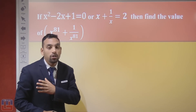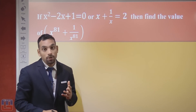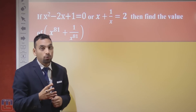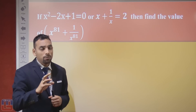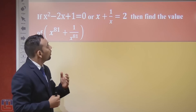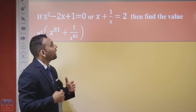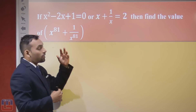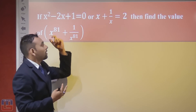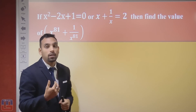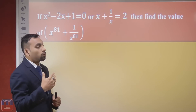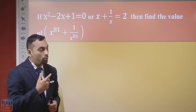Let us move to the most important tricks of algebra. In this question I will give you a trick on how to solve it and what the important factors are as far as the exam is concerned. We have given x squared minus 2x plus 1 equals 0, or equivalently x plus 1 upon x equals 2. The question then asks: find the value of x to the power 81 plus 1 upon x to the power 81.